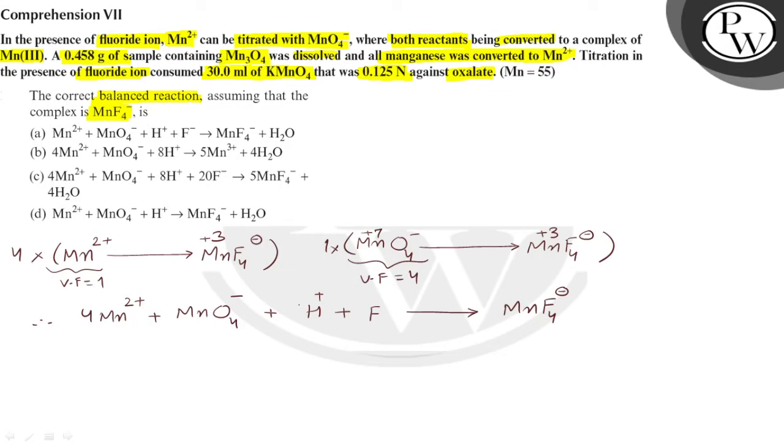Now how many H+ ions are required? Obviously 8 H+, so that 4 water molecules can be formed.